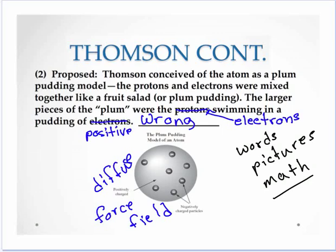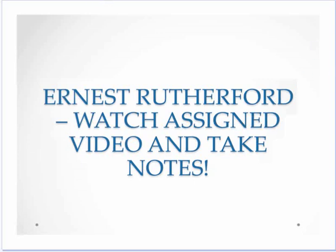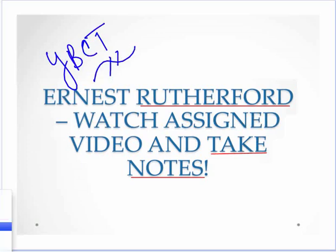Thomson being wrong spurred on the next person — Ernest Rutherford. One of your assignments is to watch an animation online about how Rutherford was able to prove that Thomson's theory was wrong. Rutherford set up an experiment with a hypothesis based on Thomson's model, and lo and behold it was proved incorrect. You need to watch that video and take notes — it will be part of your grade. We have a couple more scientists to discuss in our next video, so until then, signing off.